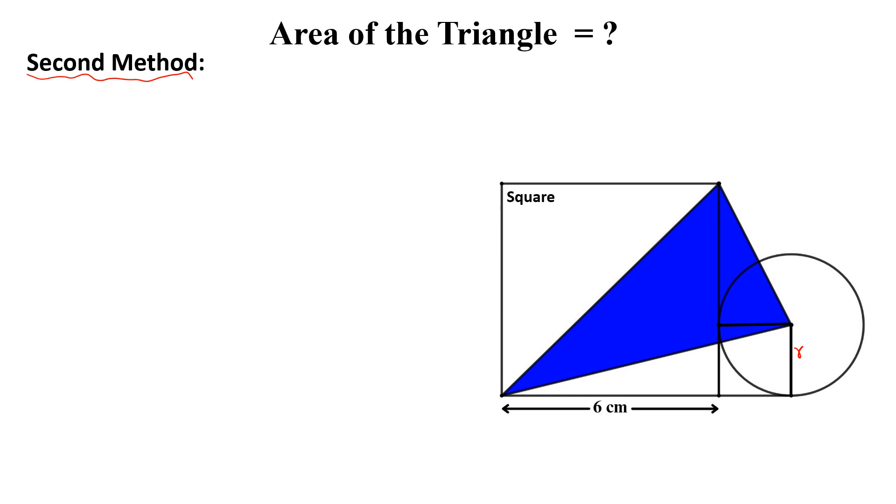Then we draw the diagonal of this small square, this is denoted by d. This diagonal is parallel to this diagonal, the diagonal of this big square.